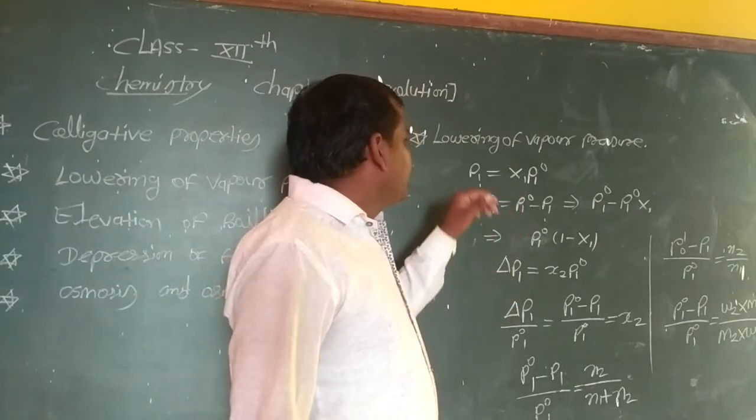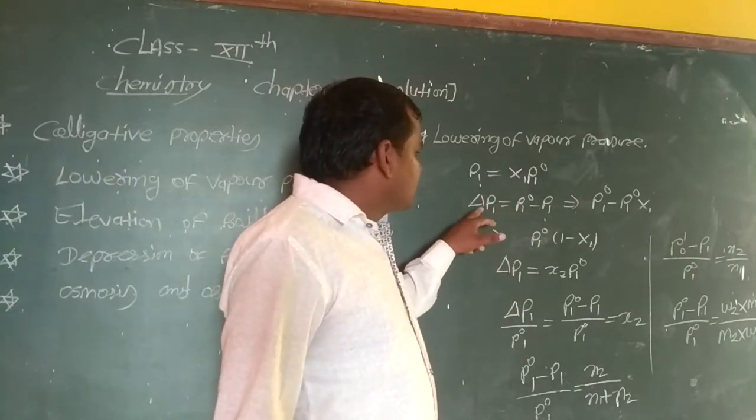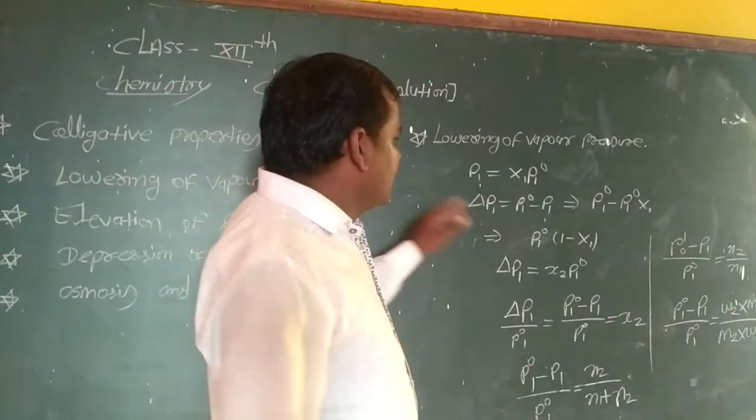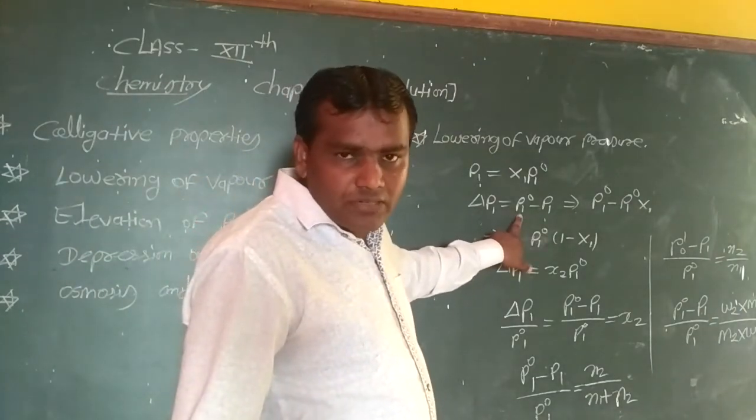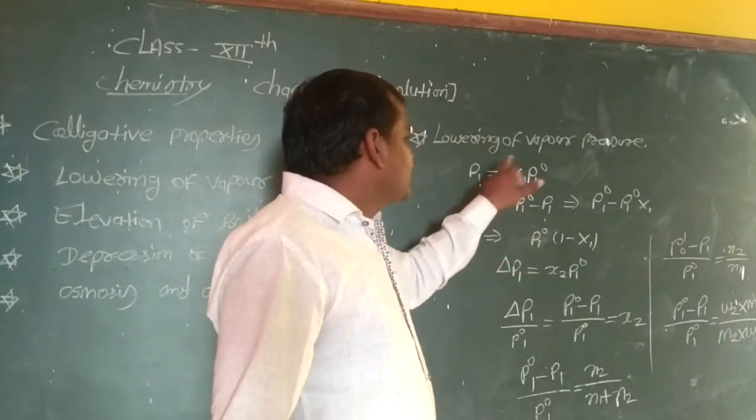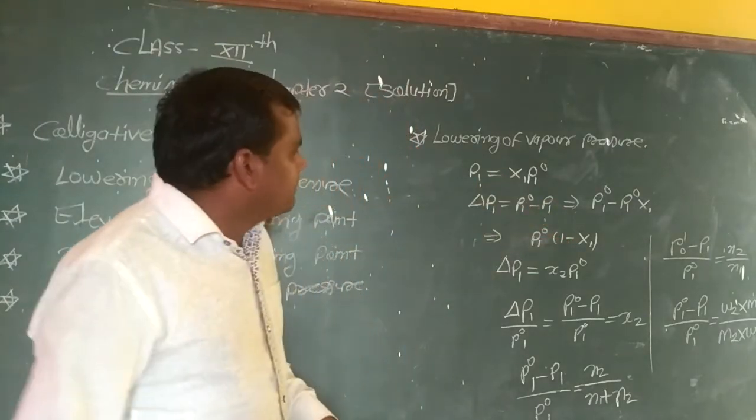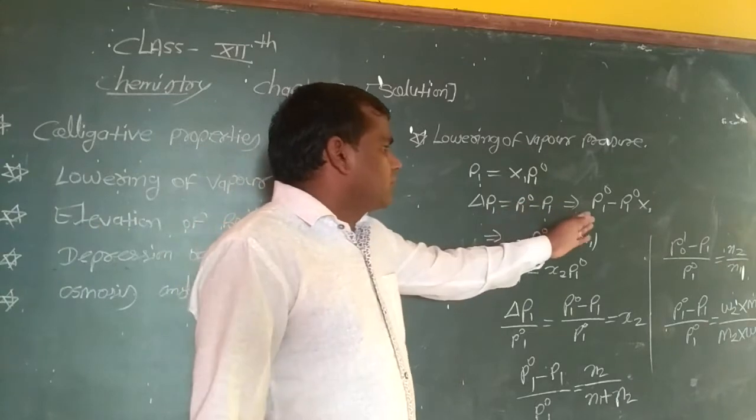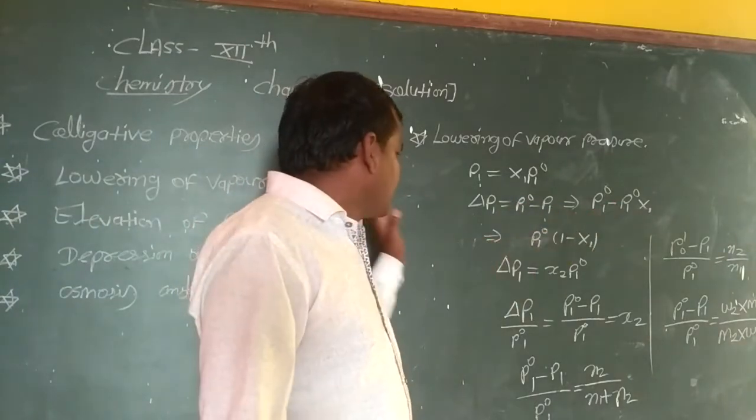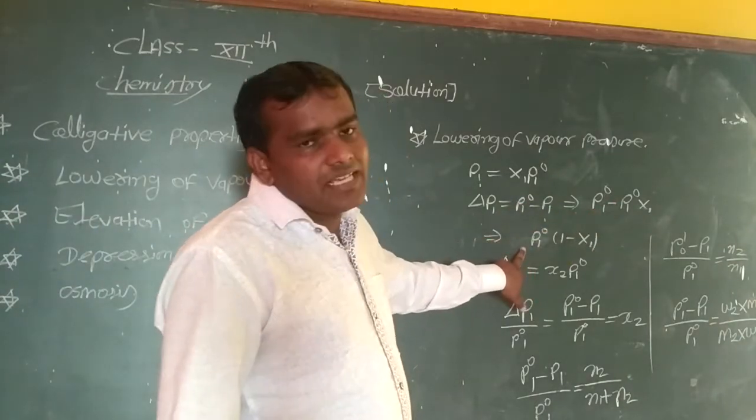For osmotic pressure, we can write the formula as P1.